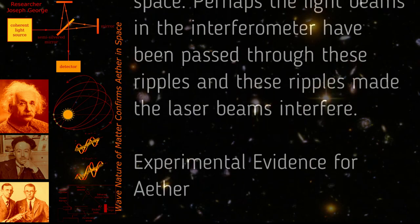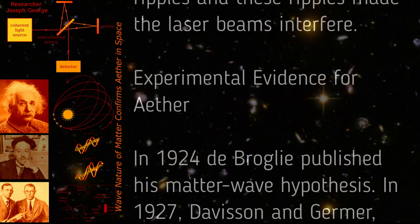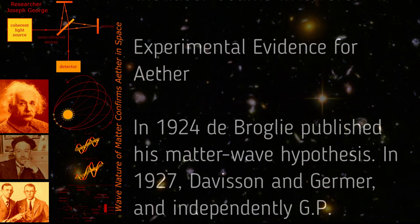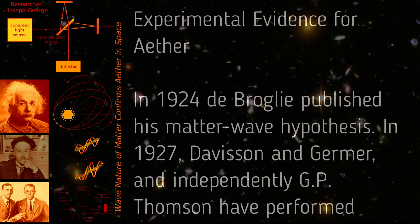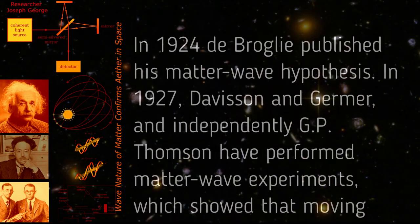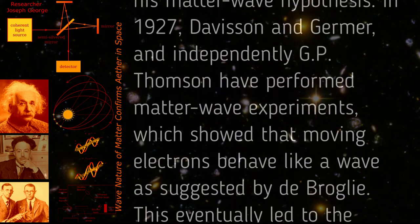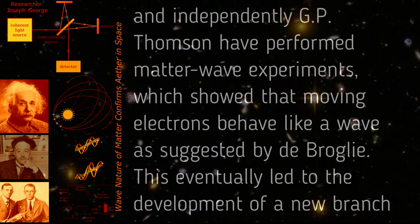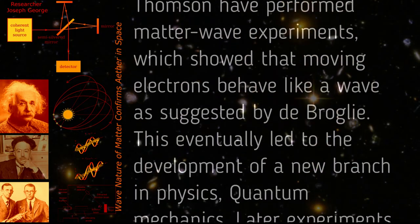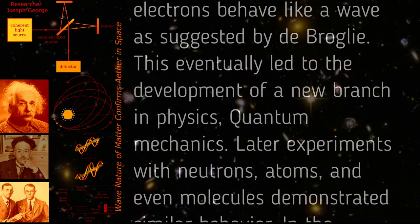Experimental evidence for ether: In 1924, de Broglie published his matter wave hypothesis. In 1927, Davisson and Germer, and independently G.P. Thompson, have performed matter wave experiments which showed that moving electrons behave like a wave as suggested by de Broglie.